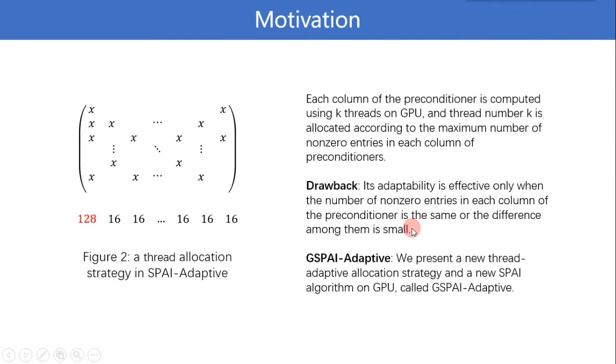Otherwise, it may be worse than the one that uses a constant warp number. Inspired by these observations, we further investigated how to parallelize the static SPAI preconditioner highly on GPU and present a new thread adaptive allocation strategy. On the basis of the proposed strategy, we present a new SPAI algorithm on GPU called GSPAI-Adaptive.